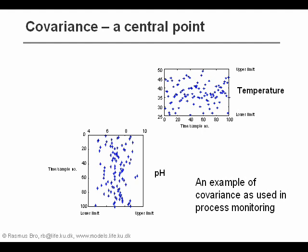We might have another measurement — for example, the pH value — and just as for the temperature, we can see that there is a certain level of normal variation. So for both of these variables, we would say that the process is in control.